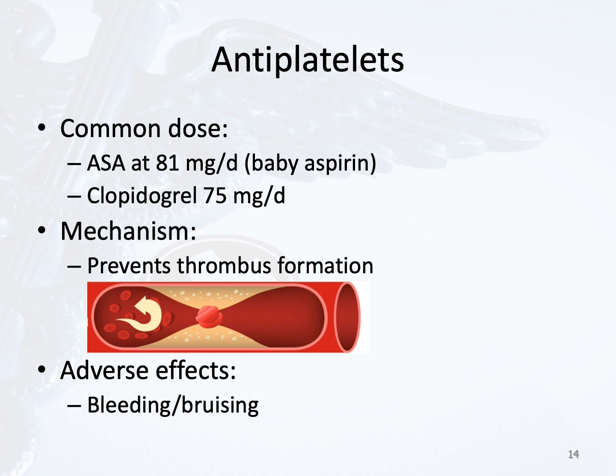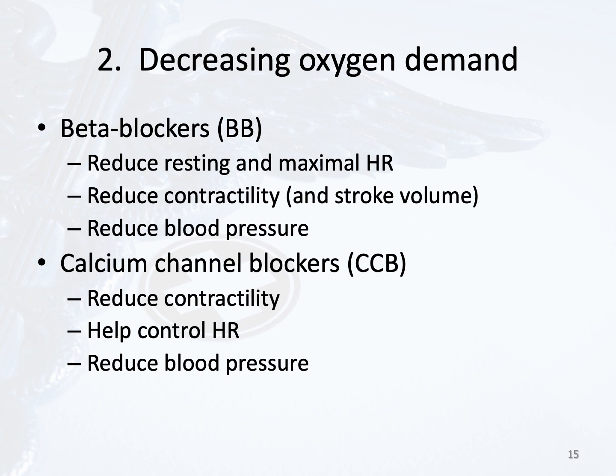Another way to improve oxygen supply to the heart is to prevent thrombus formation by decreasing the platelets' ability to stick together at the site of an injury, often where there is a rupture of plaque within the coronary artery. Antiplatelet drugs such as aspirin or clopidogrel (Plavix) can be used. Aspirin can also be chewed — not swallowed — if the patient is in acute coronary syndrome. One major adverse effect of aspirin is bleeding, which is especially an issue in patients with an increased fall risk, as they can develop cerebral bleeding if they fall and hit their head.